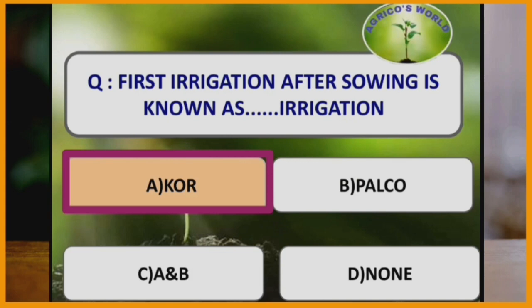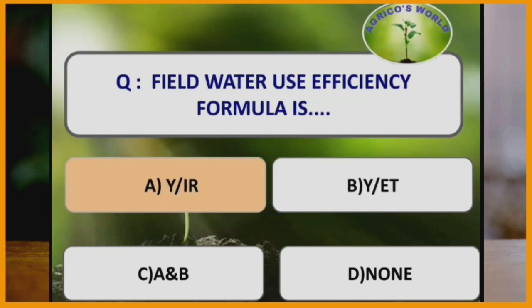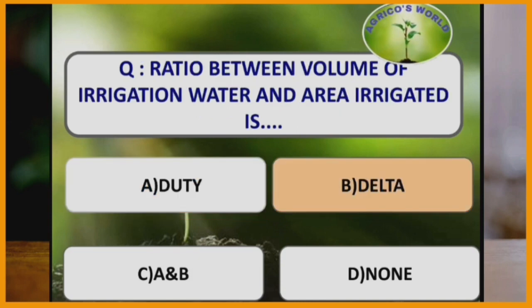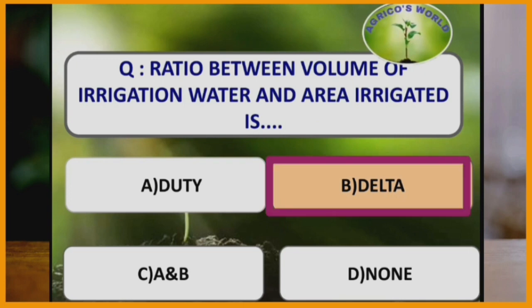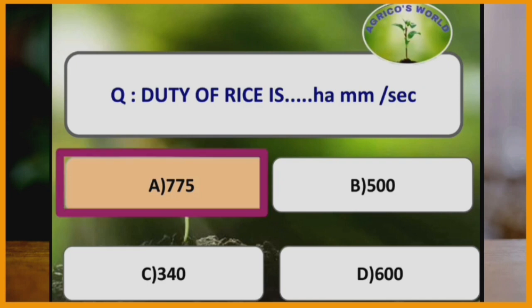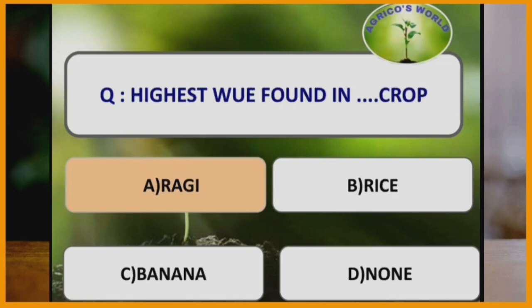First irrigation after sowing is known as core irrigation, whereas irrigation before sowing is called palco. Field water use efficiency formula is yield divided by irrigation requirement. Delta is the ratio between volume of irrigation water and area irrigated.